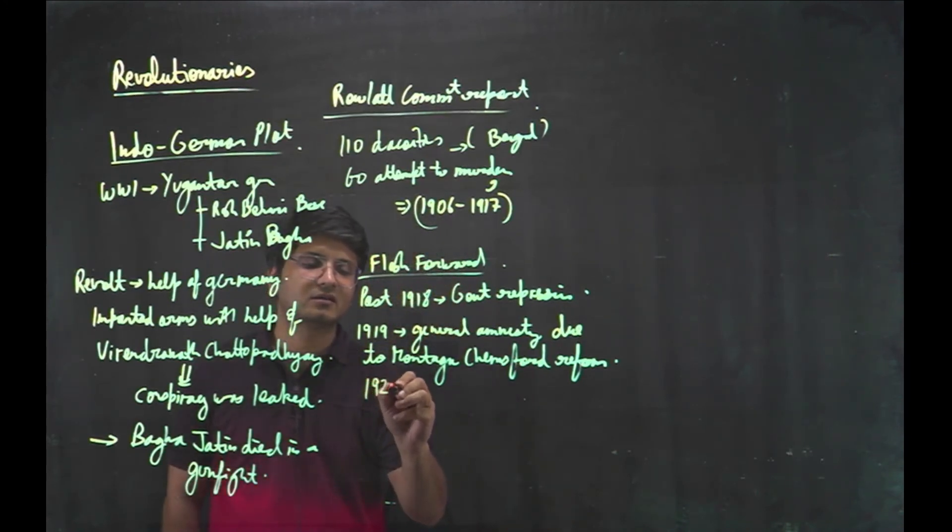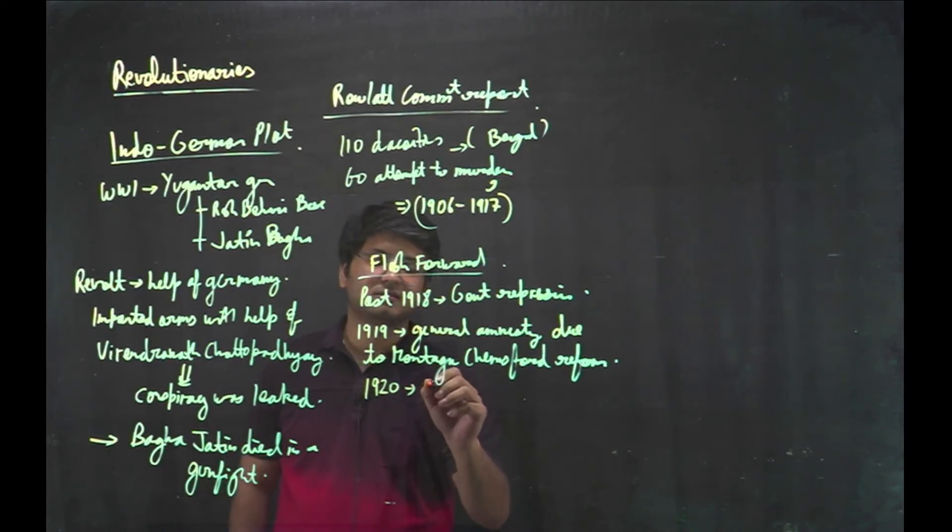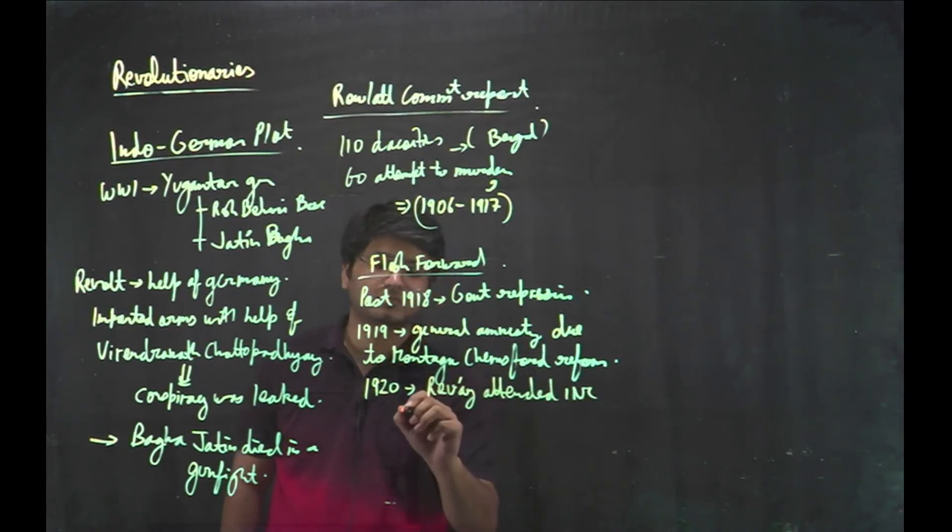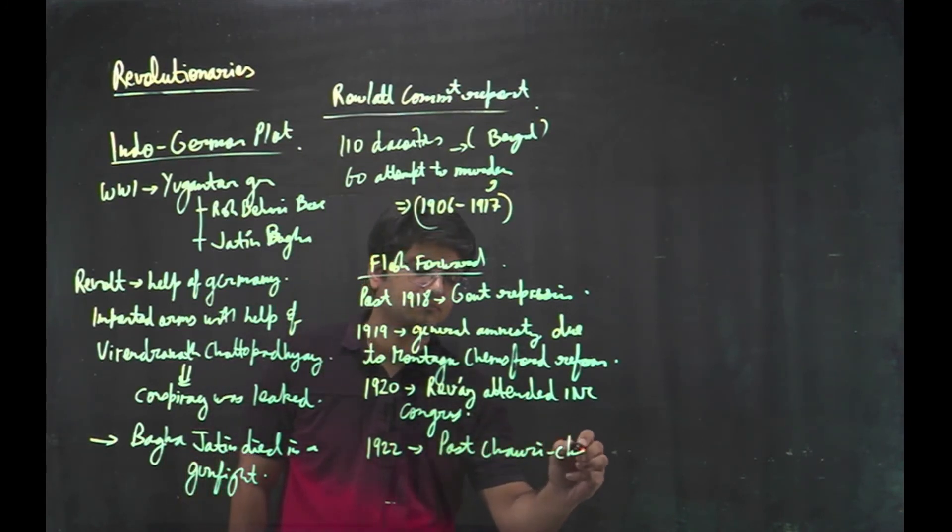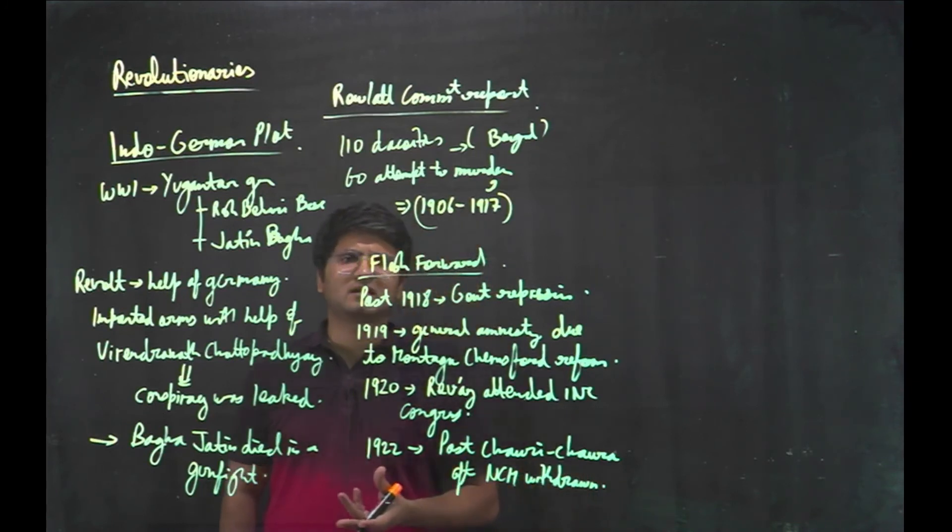Gandhiji also appealed to the revolutionaries to shun violence and to join non-cooperation, non-violent methods. In 1920, session of Congress, revolutionaries attended it. But later on, post Chauri Chaura, after the withdrawal of non-cooperation movement.